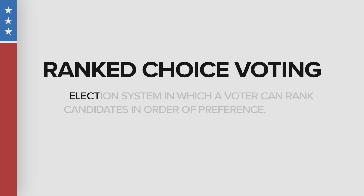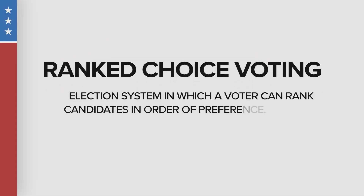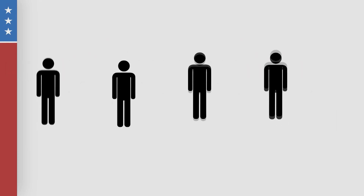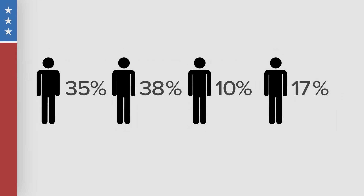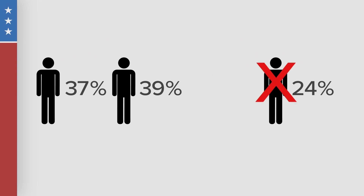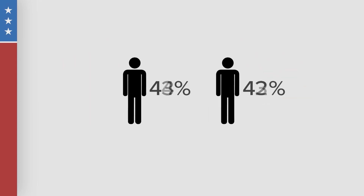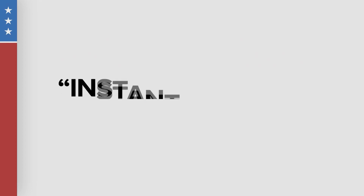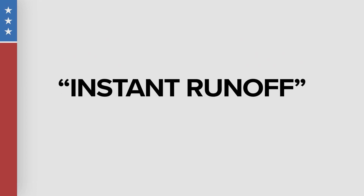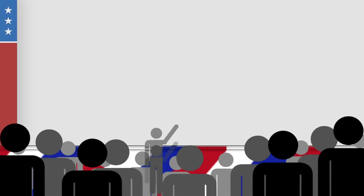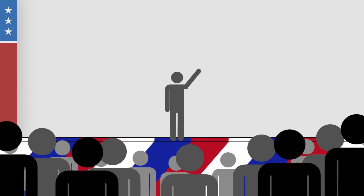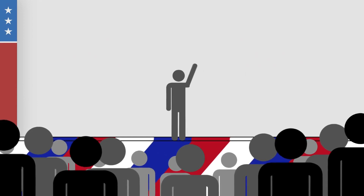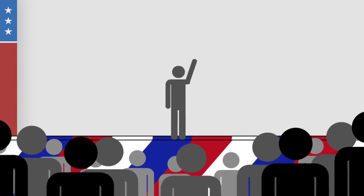Ranked choice voting is an election system in which a voter can rank candidates in order of preference. At least three candidates are needed for ranked choice voting to work, and a winner is determined through elimination rounds until a candidate reaches more than 50%. Because of this procedure, ranked choice is also called instant runoff voting. There are rules in place for multiple winner elections and one winner elections, but let's just focus on one winner elections here.